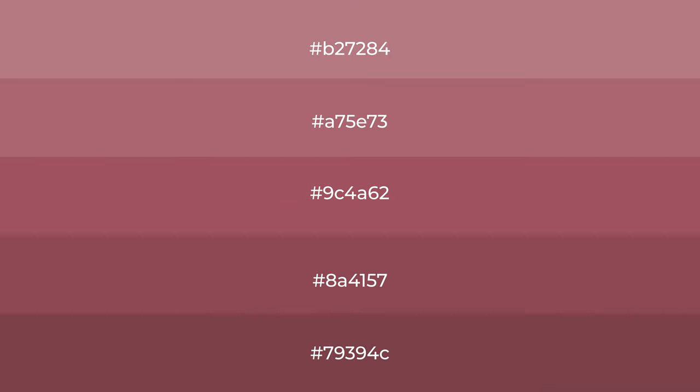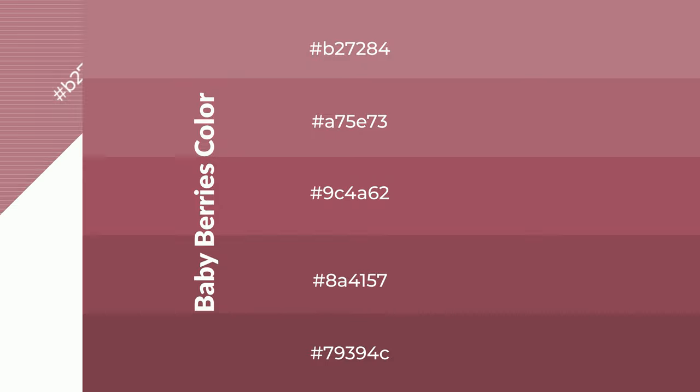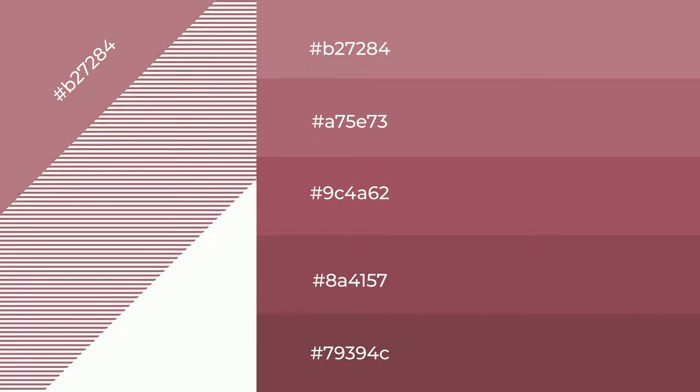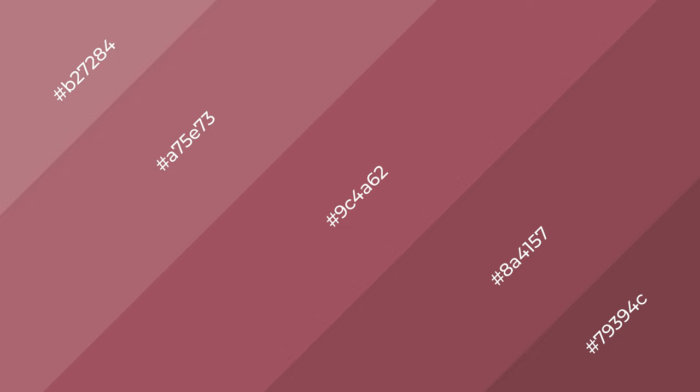To generate shades of a color, we add black to the color, and it is used in patterns and 3D effects. Layers and shades create depth and drama. Baby berries is a warm color and it emits cozier and active emotions.